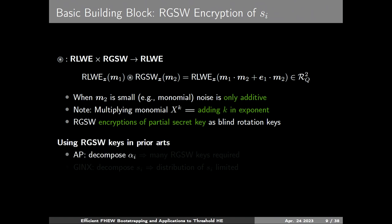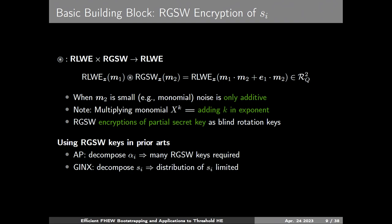Since we only have addition in the exponent, we need workarounds. In AP, we decompose alpha_i and need many RGSW keys for all possible decompositions of alpha. In Jinx, we decompose s_i instead and can control the distribution of s_i for efficient algorithm design, but the distribution of s_i is somehow limited.